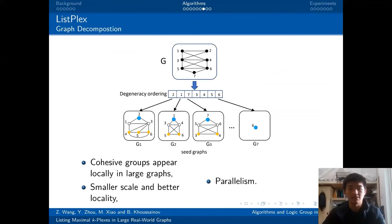Here are some discussion about our framework. The first question is, why do we need the graph decomposition? The first reason is, cohesive groups always appear locally in real-world graphs. It means we can search locally. The second reason is, with a smaller scale, we can gain better locality and faster speed. The last reason is, the tasks on different seed graphs are independent, it means enabling parallelism.